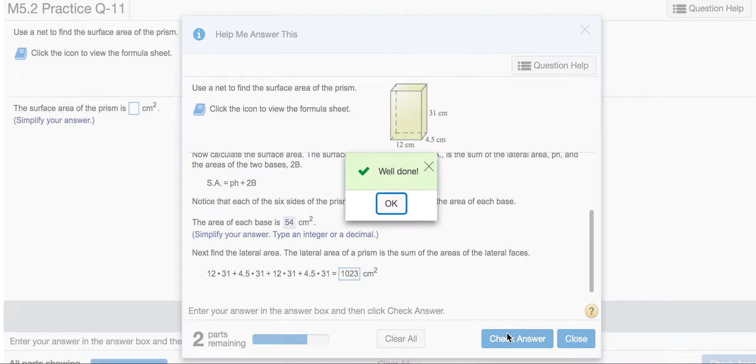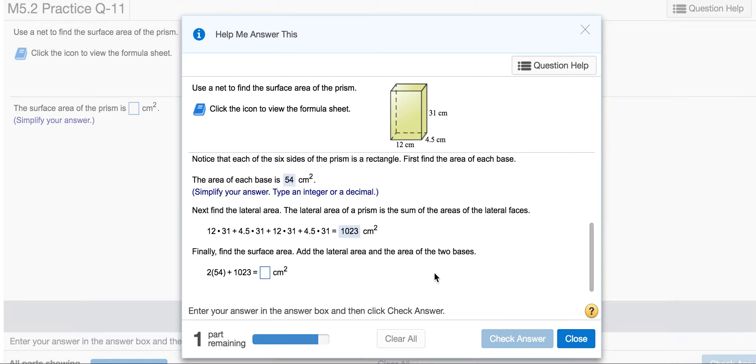Now use your calculator and remember order of operations. Do all the multiplication first: 12 times 31, then 4.5 times 31, and plug those in. When you add it all together, you get 1,023.